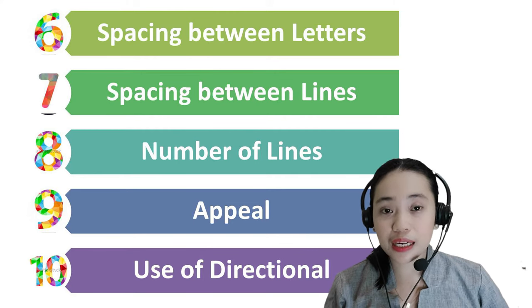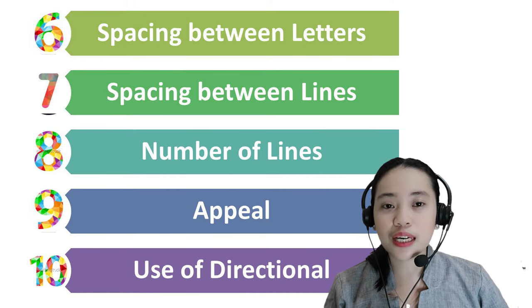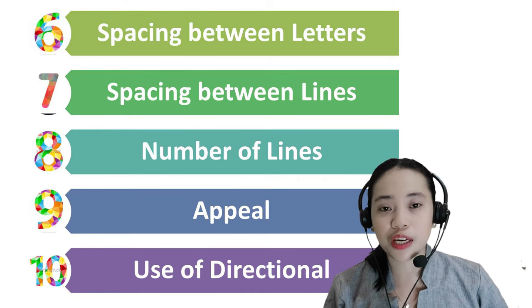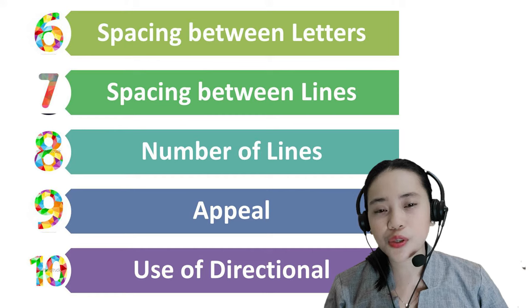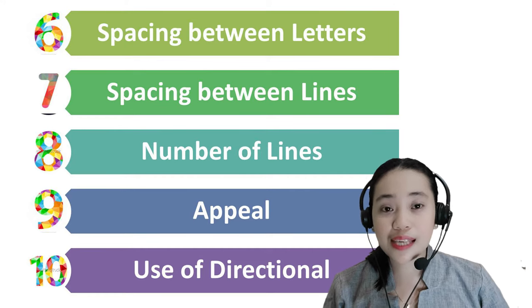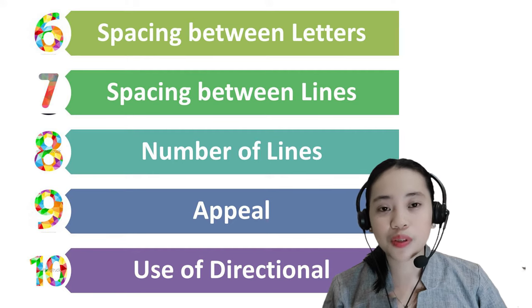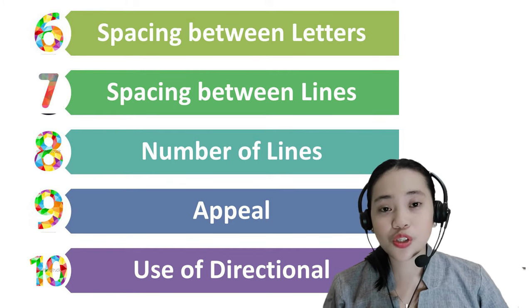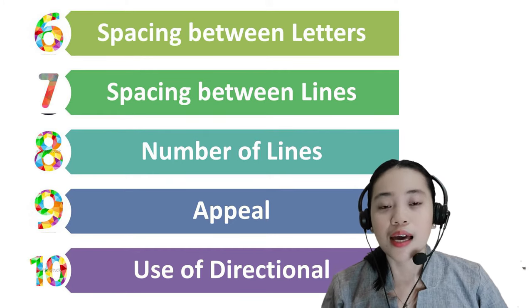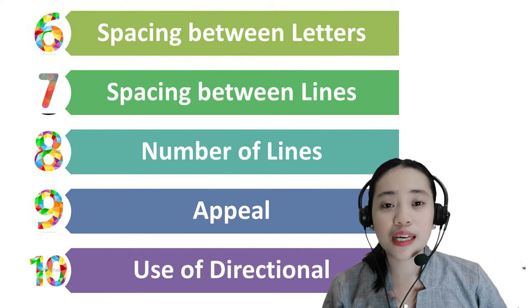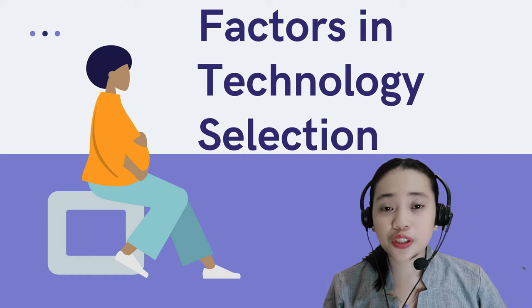Number nine, appeal: it is very unusual and catchy. It is two-dimensional and interactive. Sometimes it uses overlays or removable flaps. And ten, the use of directionals or devices like arrows, bold letters, bullets, contrasting color and size, and special placement of an item to indicate emphasis. We also need to consider the factors in technology selection.